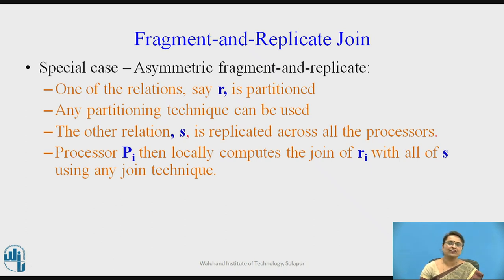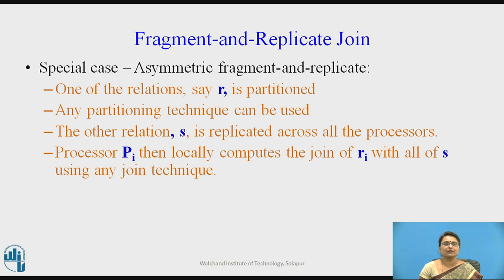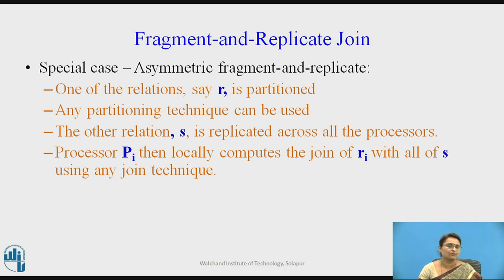Basically, if we have relations R and S where R has more tuples than S, the bigger relation with a large number of tuples is partitioned and the smaller one — say S — is replicated. Each processor PI locally holds partition RI and the replicated version of relation S, so it performs the join operation of RI with S locally.